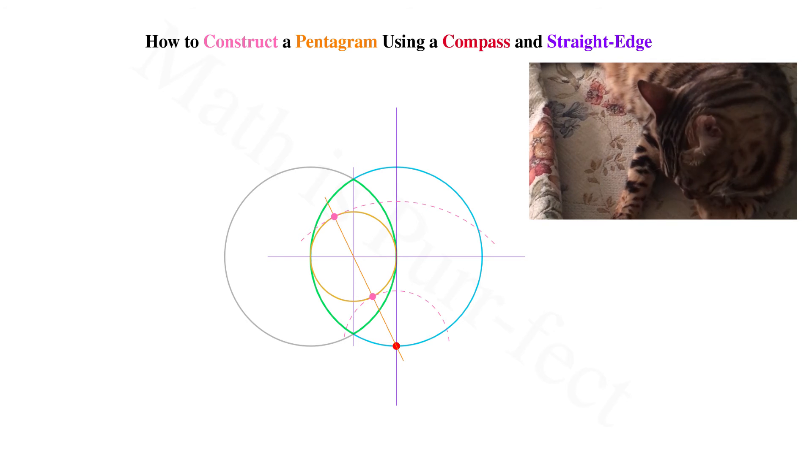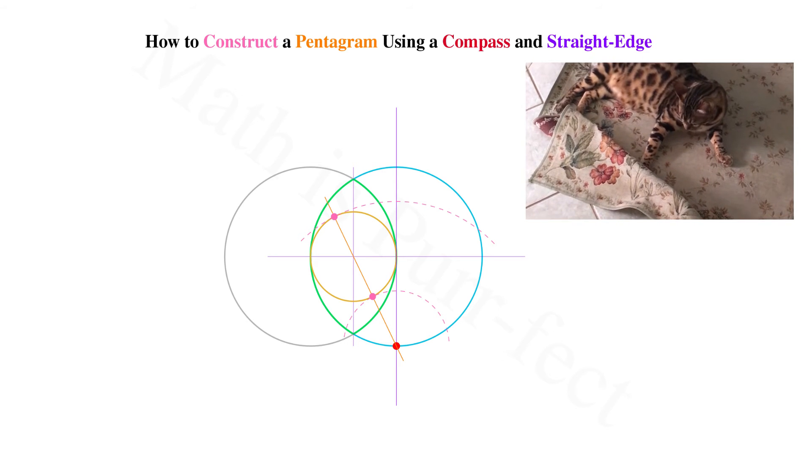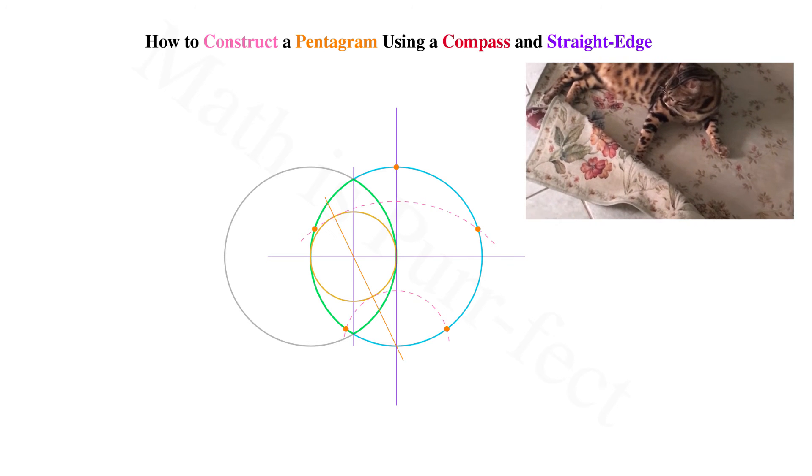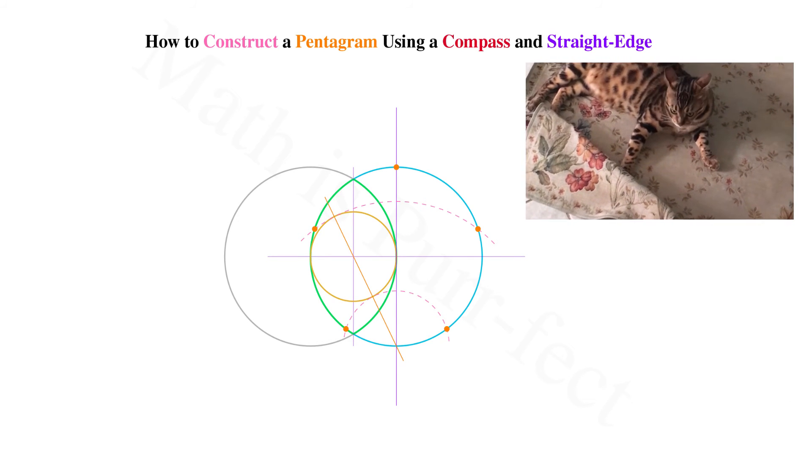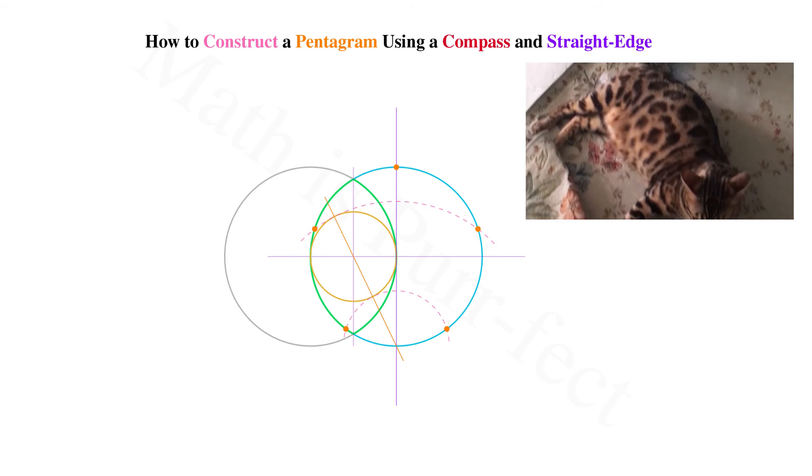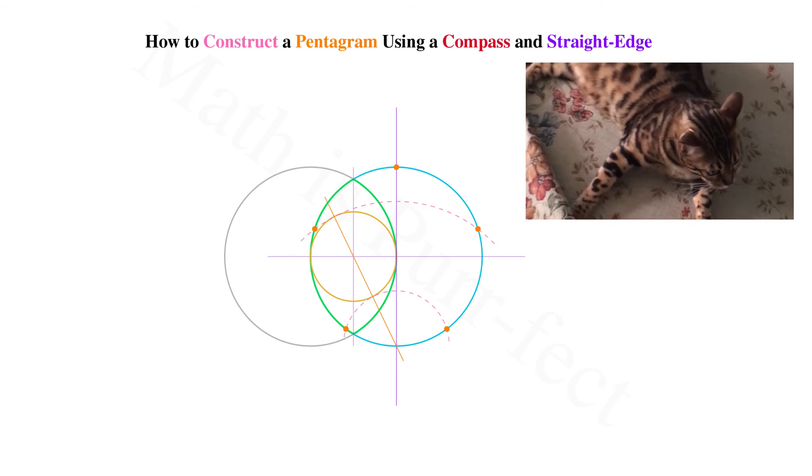We then do the same with the closer pink dot, drawing an arc so that it too intersects the original circle twice. Now let's highlight the four positions where the two arcs intersect the circle, as well as the intersection of the bisector and the top of the circle, seen here in orange.